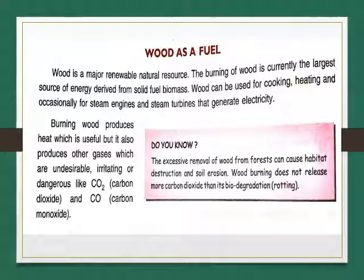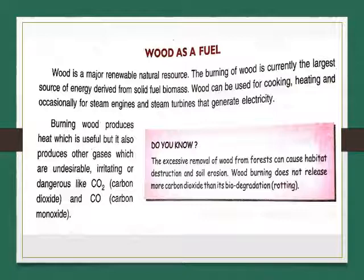The excessive removal of wood from the forest can cause habitat destruction and soil erosion, due to which we are now facing the problem of less rainfall and increase in temperature. Wood burning does not release more carbon dioxide than its biodegradation, that is rotting. So we have to save trees, save plants, and do plantation more and more.